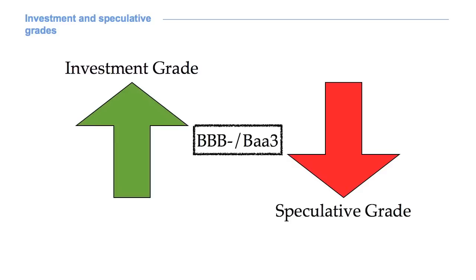Credit ratings are often used to define the speculative nature of a bond. A bond issue, or a company, whose rating is at least BBB- according to Fitch and Standard & Poor's, or Baa3 according to Moody's, is said to be in the investment grade — considered safe enough to be a reliable investment, and therefore we accept lower returns. A bond issue below those thresholds is said to be in the speculative grade: we can expect higher returns, but also higher risks.